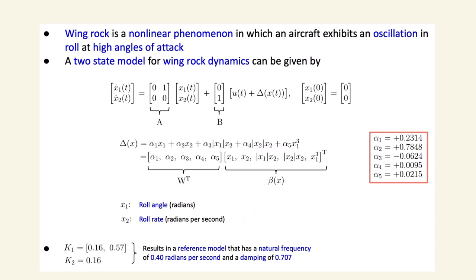For the nominal controller, K1 and K2 are chosen so that the reference model has a natural frequency of 0.4 radians per second and critical damping of 0.707, capturing the desired ideal performance.